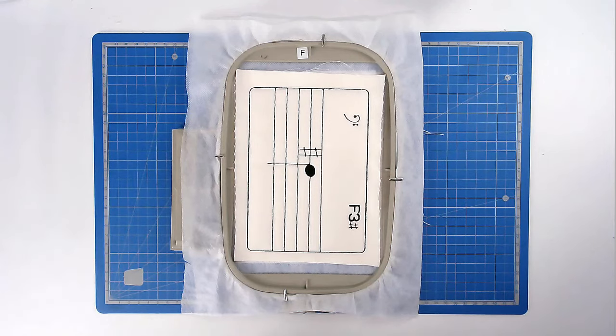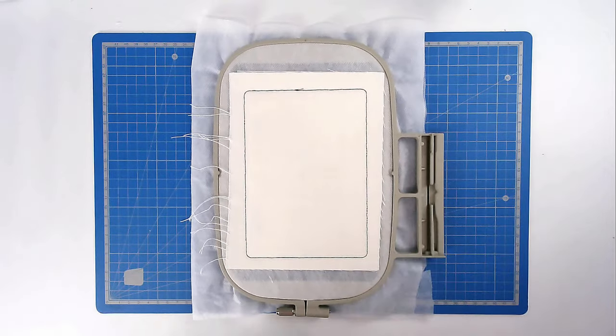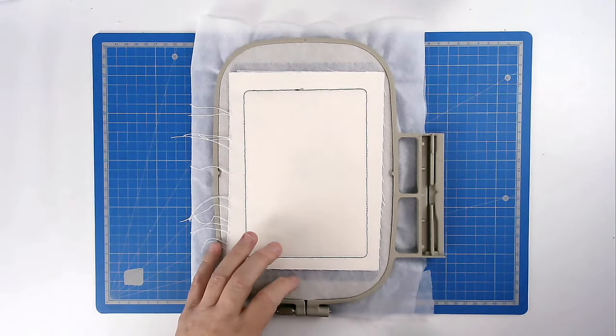Trim away the excess fabric and cutaway stabilizer from both back and front of your hoop. So turn your hoop over and trim away taking care not to cut your stitches.